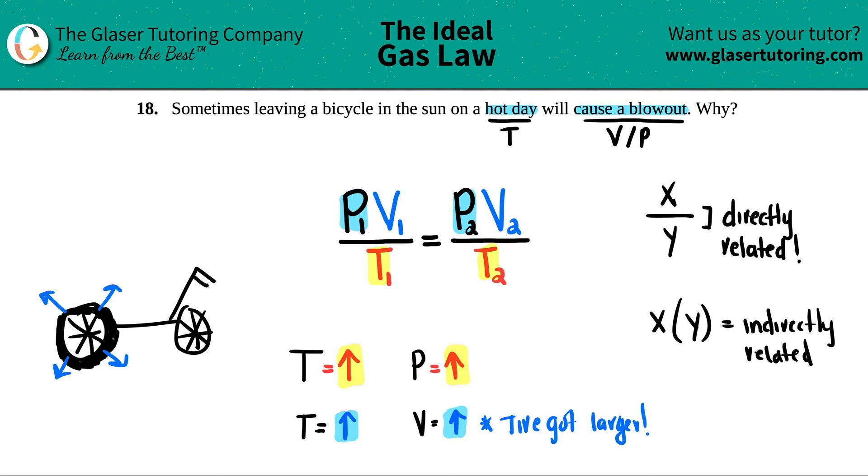Just know the generalities: if you see a variable on the numerator and a variable on the denominator, they're directly related. That means if one goes up, the other one's got to go up. But if you're talking about two variables on the same part—either numerator or denominator—if one goes up, the other one has to come down. That's what indirect relation means.